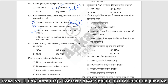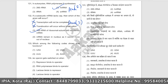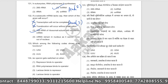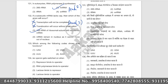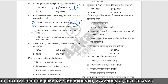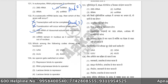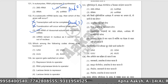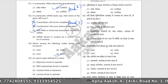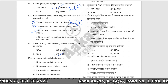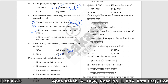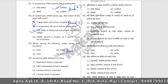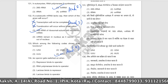Which among the following codons shows dual functions? The codon AUG shows dual functions — it codes for methionine and also serves as the initiation codon. The correct answer is option number four.